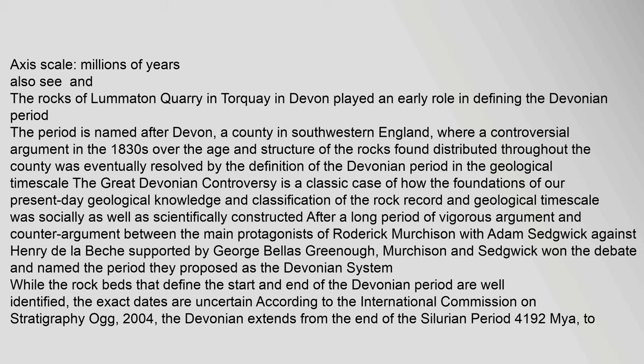The period is named after Devon, a county in southwestern England, where a controversial argument in the 1830s over the age and structure of the rocks found distributed throughout the county was eventually resolved by the definition of the Devonian Period in the Geological Timescale. The Great Devonian Controversy is a classic case of how the foundations of our present-day geological knowledge and classification of the rock record and geological timescale was socially as well as scientifically constructed after a long period of vigorous argument between Roderick Murchison with Adam Sedgwick against Henry de la Beach supported by George Bellas-Greeno. Murchison and Sedgwick won the debate and named the period they proposed as the Devonian system.